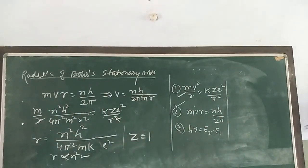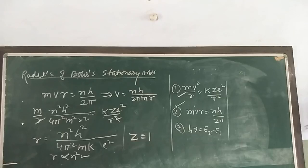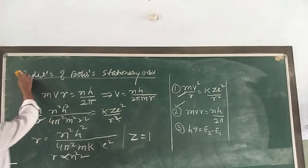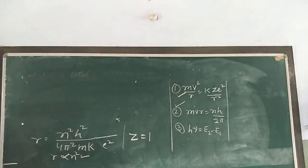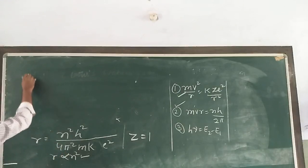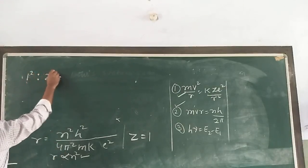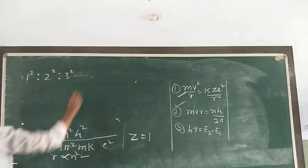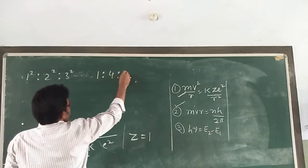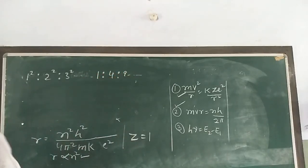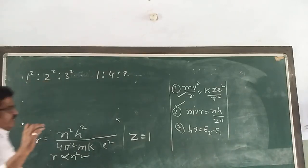Putting n = 1, 2, 3 and so on, we can get the radii. The radii of stationary orbits are in the ratio of 1², 2², 3², that is 1 : 4 : 9 for r₁, r₂, r₃. So the stationary orbits are not equally spaced.